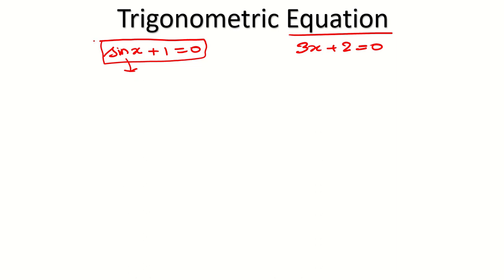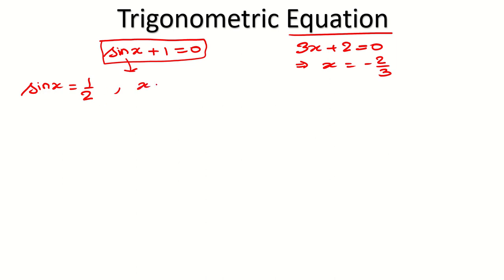When we have an equation, we can have a solution also. For example, in a linear equation, x equals minus 2 by 3 is the solution. So if I say sin x equals 1 over 2, then what will be the solution of this trigonometric equation? Some of you will say x equals 30 degrees or pi by 6. Some of you will say 180 minus 30, meaning 150 degrees.